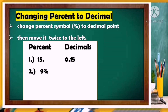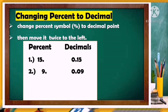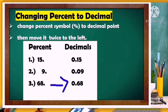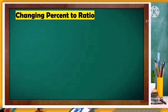How about number two — 9 percent? Change the percent symbol into a decimal point, then move it twice to the left: one, two. Add a zero, so the answer is 0.09. Number three — 68 percent. Change the percent symbol to a decimal point and move it twice to the left: one, two. The answer is 0.68, or sixty-eight hundredths.